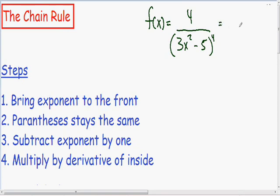So I am going to rewrite this as 4 and the parenthesis 3x squared minus 5 is going to have a negative exponent in the numerator. So now we have a parenthesis followed by an exponent, so now we can use the chain rule.